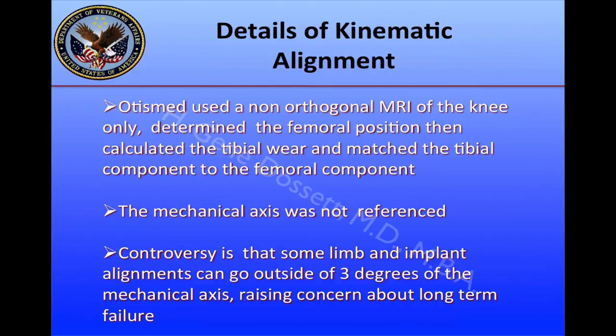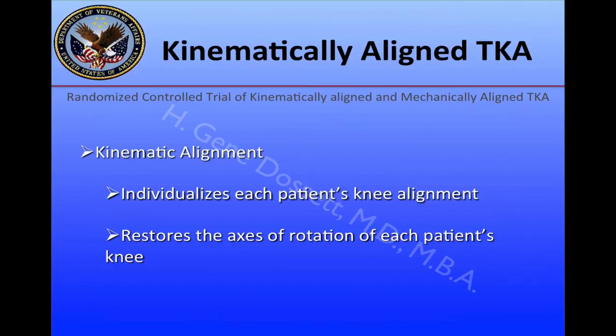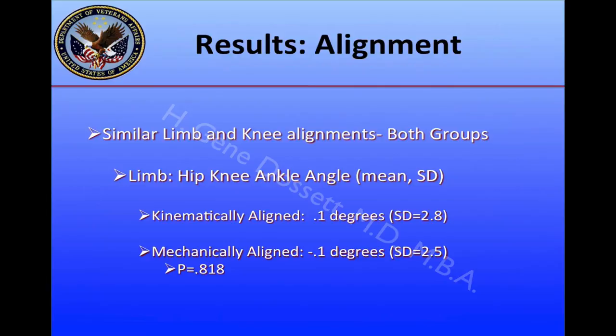The controversy is that some limb and implant alignments can go outside of three degrees, and some people have a concern whether this will cause long-term failures. We studied this technique at our institution in a randomized controlled trial, looking at kinematically and mechanically aligned total knee arthroplasty, and we observed our two-year results, published in July 2014. The hip-knee-ankle angle for both groups was very close to a straight line, with no significant difference between the two groups in terms of limb alignment.